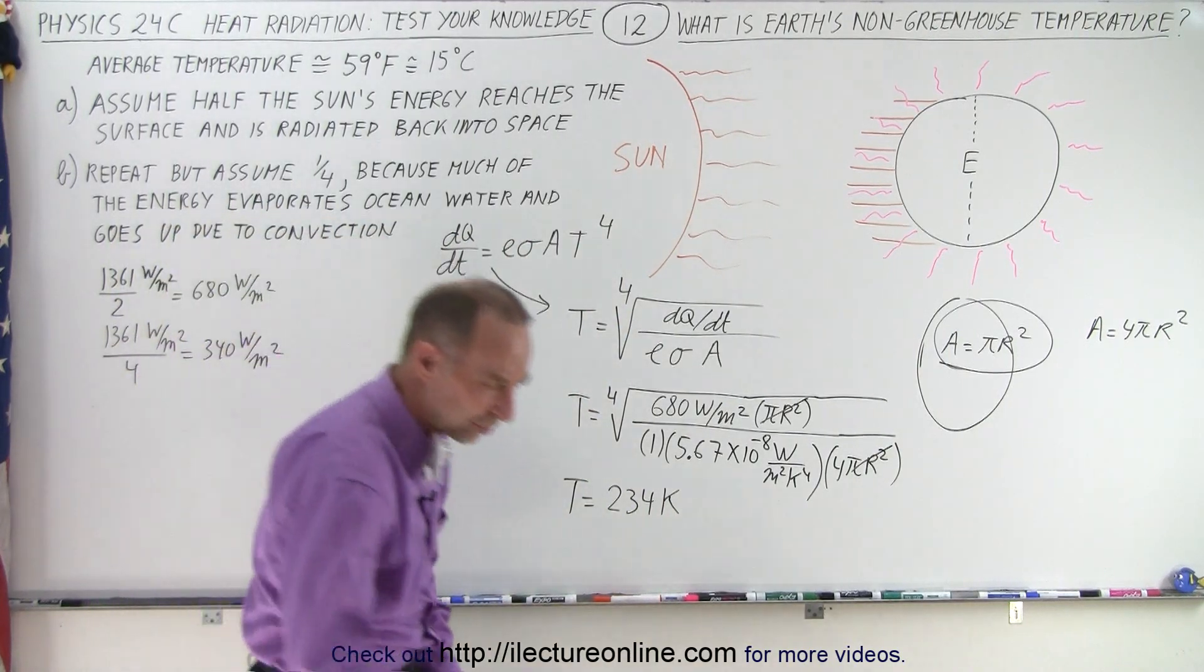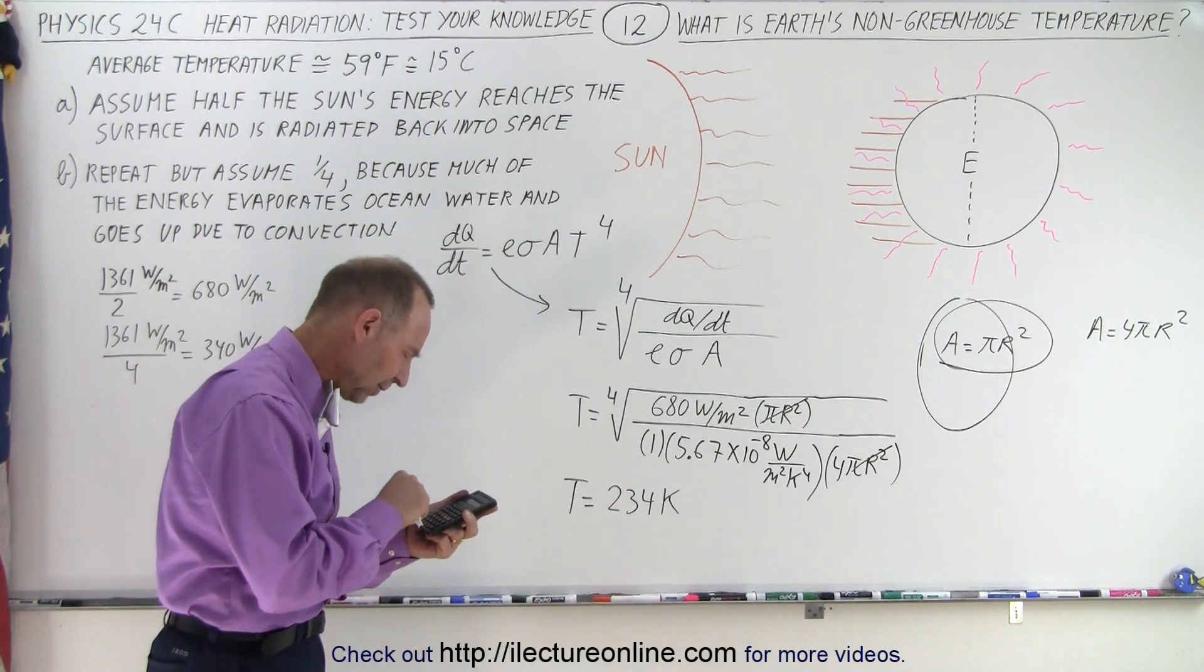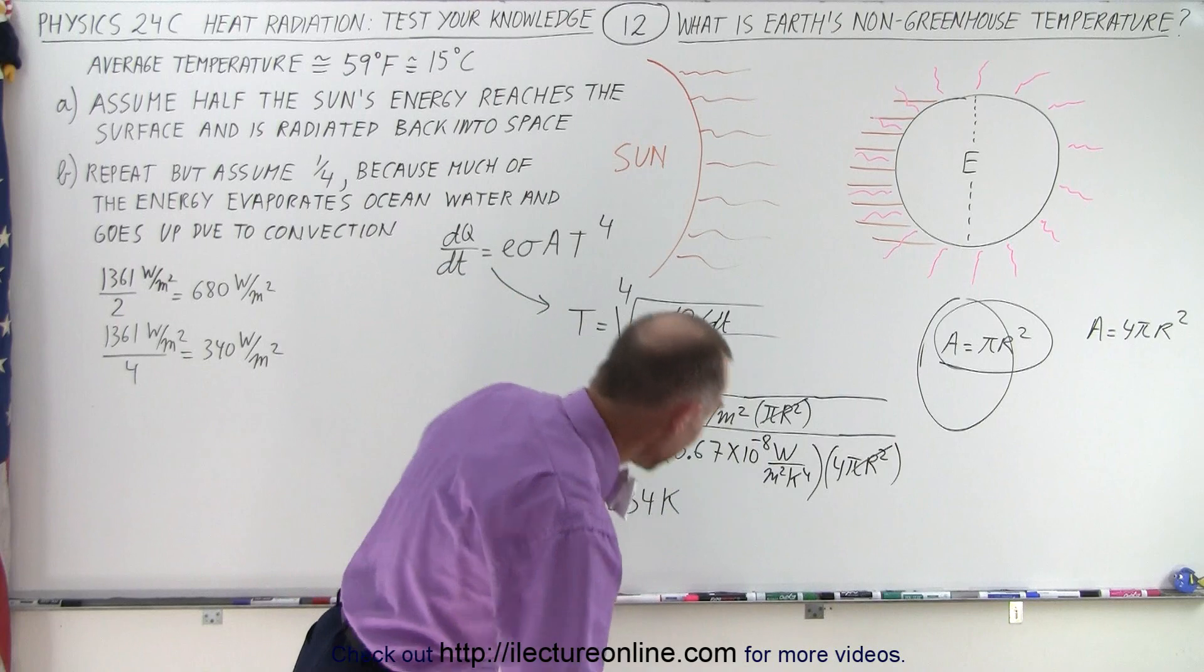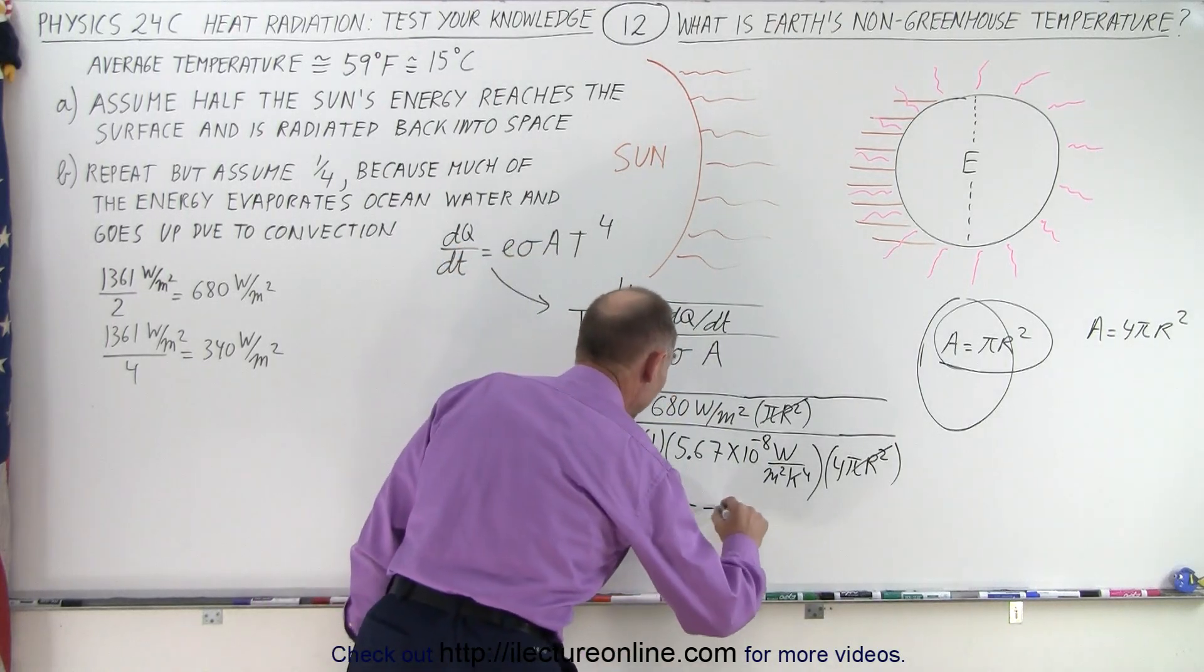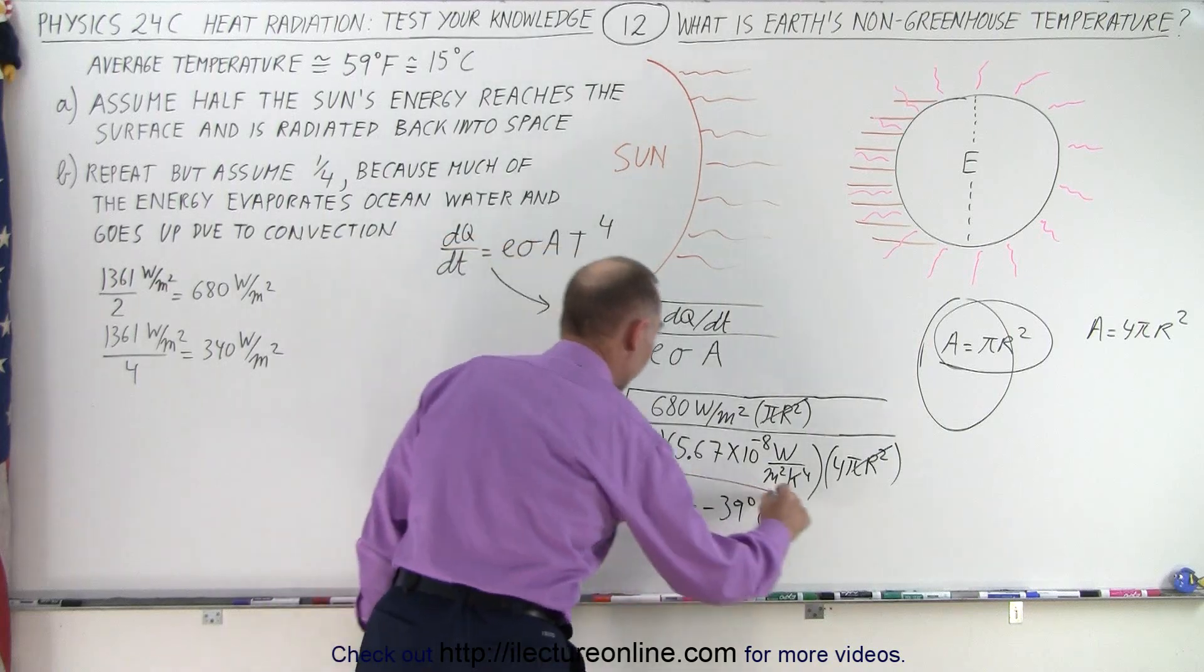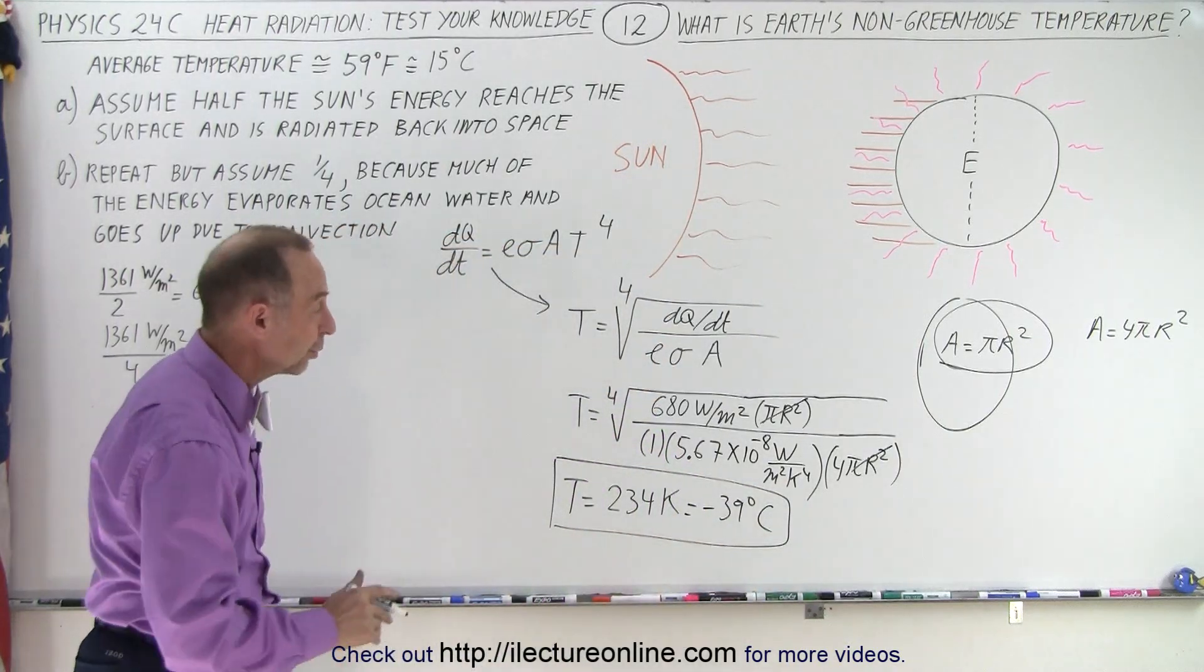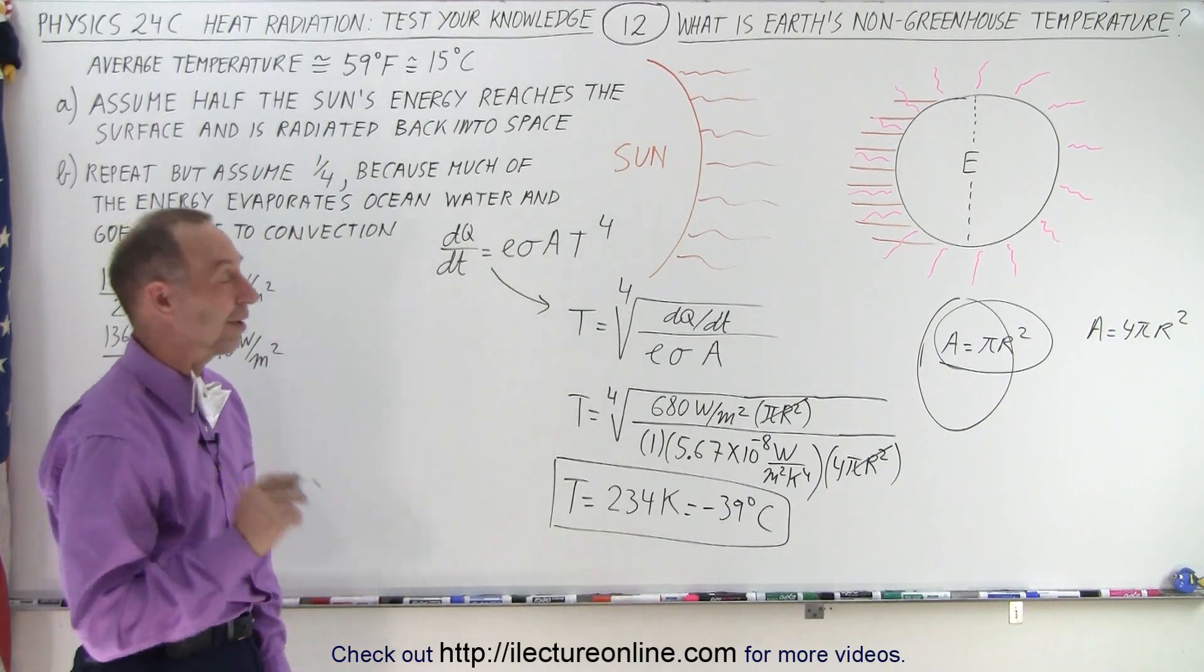How much is that in Celsius? So let's subtract 273 from that. So minus 273 and that would be equal to minus 39 degrees Celsius. So it's equal to minus 39 degrees Celsius. So that's quite a shock. The average temperature of the world just purely using this simplistic model would be minus 39 degrees Celsius.